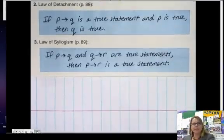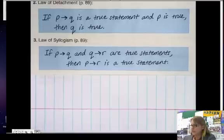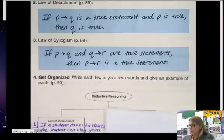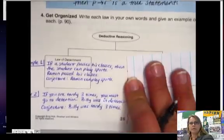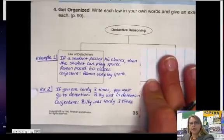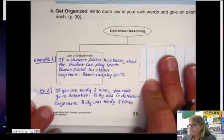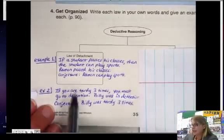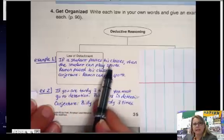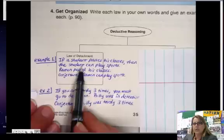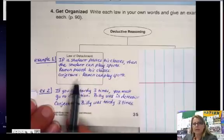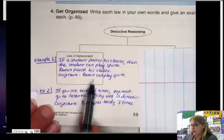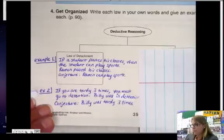Let's look at a couple of examples of the law of detachment. Here we have example one. Example one says: if a student passes his classes, then the student can play sports. We are told that Ramon passed his classes, so our conjecture is that Ramon is allowed to play sports.